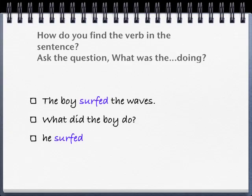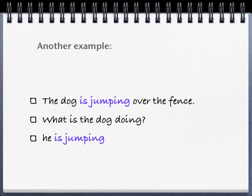How do you find the verb in a sentence? Well, for most verbs, you can simply ask the question: what was whoever doing? For example, the boy surfed the waves — what did the boy do? He surfed. Another example: the dog is jumping over the fence. What is the dog doing? He is jumping.